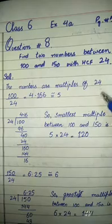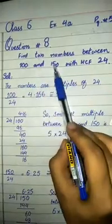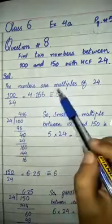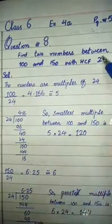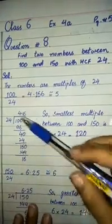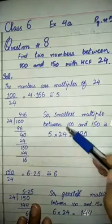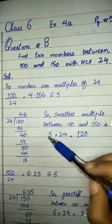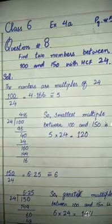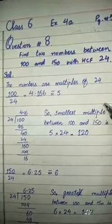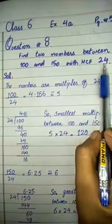First, we identify the smallest and greatest multiples of 24 that fall between 100 and 150. To find these, we divide 100 and 150 by 24. The results give us the multipliers, and we then multiply back by 24 to get the original numbers, because HCF is the divisor.